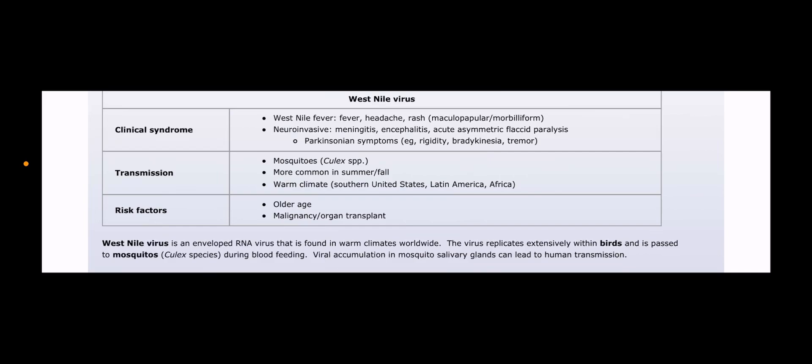Now we're going to read the summarized table. The West Nile virus clinical syndromes include: fever, headache, and rash (maculopapular form); and neuroinvasive disease — for example, meningitis, encephalitis, and acute asymmetric flaccid paralysis, as previously discussed.